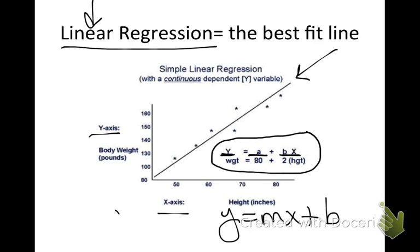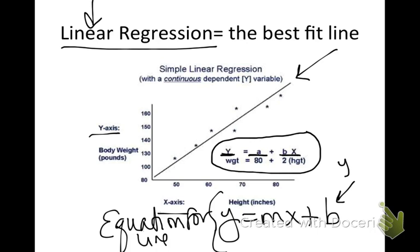Remember, b is our y-intercept, m is our slope, and x and y are our two data points.